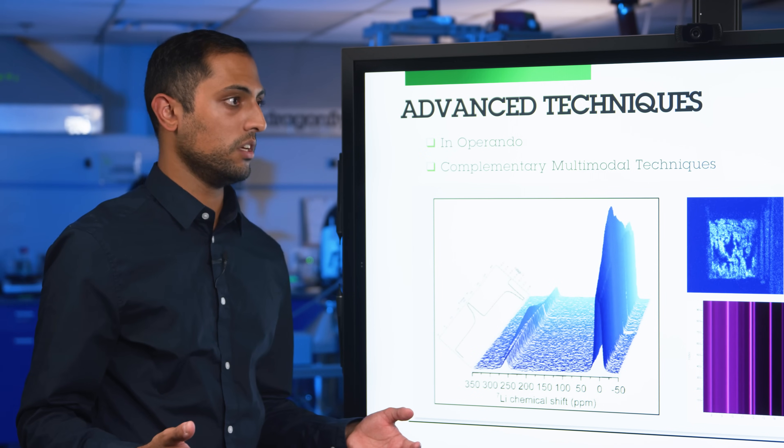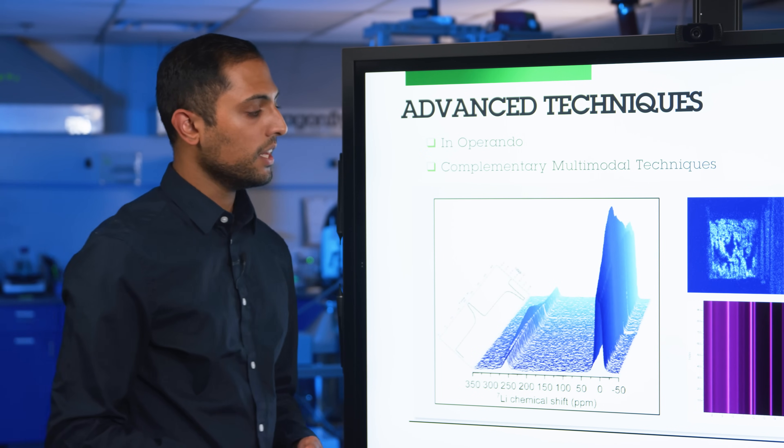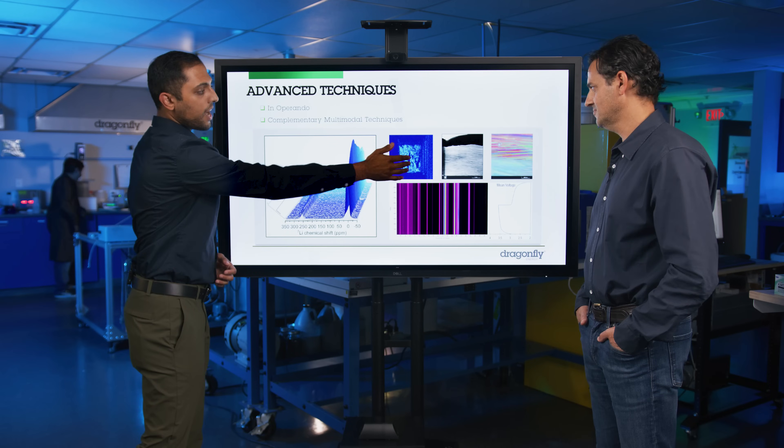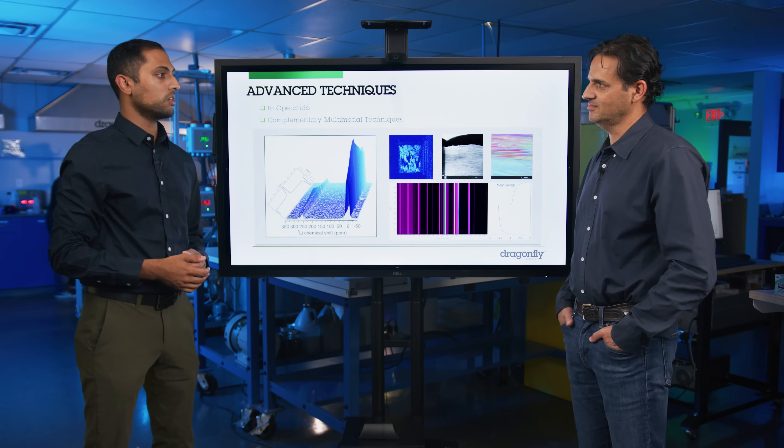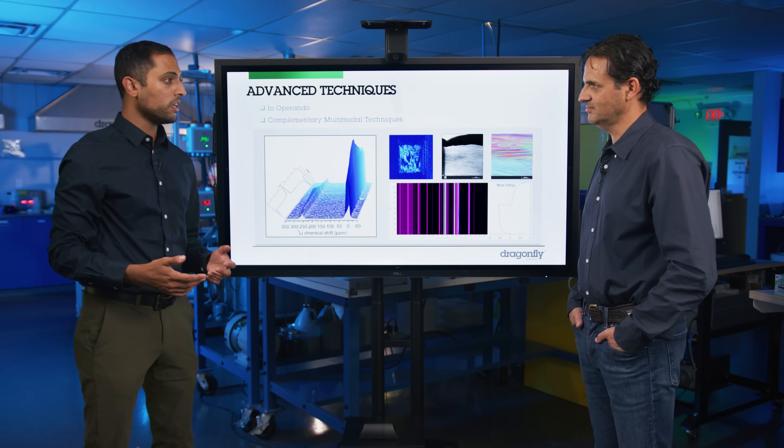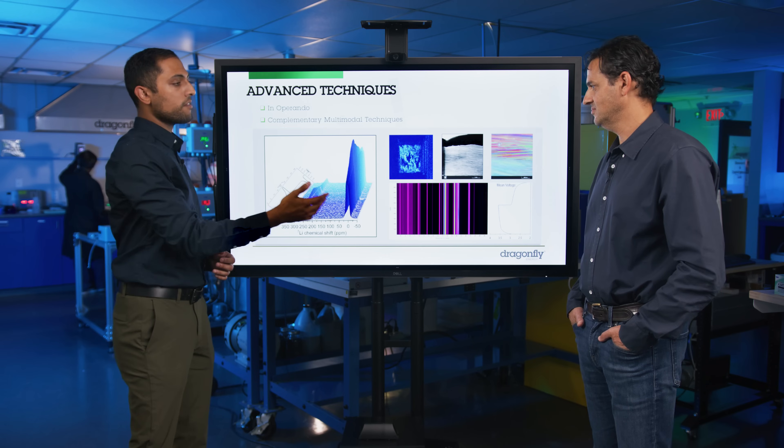And lastly, we can go into extremely high resolution using techniques like scanning transmission electron microscopy or STEM. And you had mentioned we look for graphite exfoliation, the spreading of those planes in the graphite as signs of degradation.